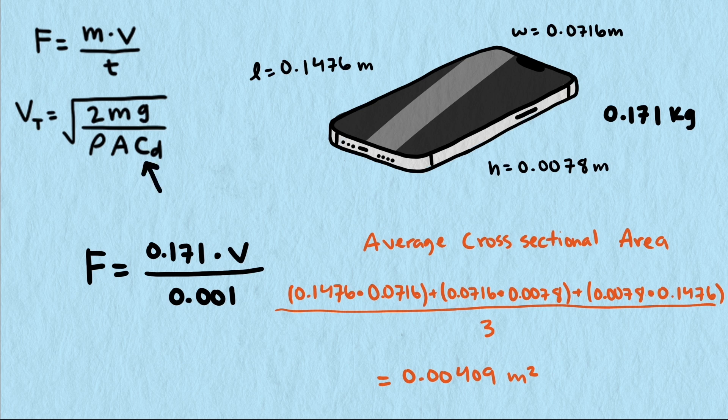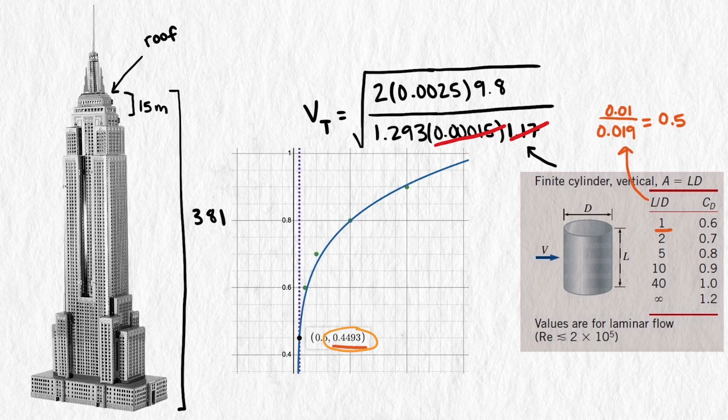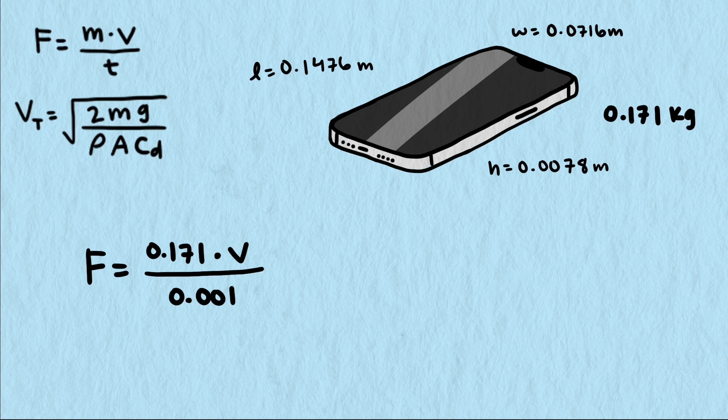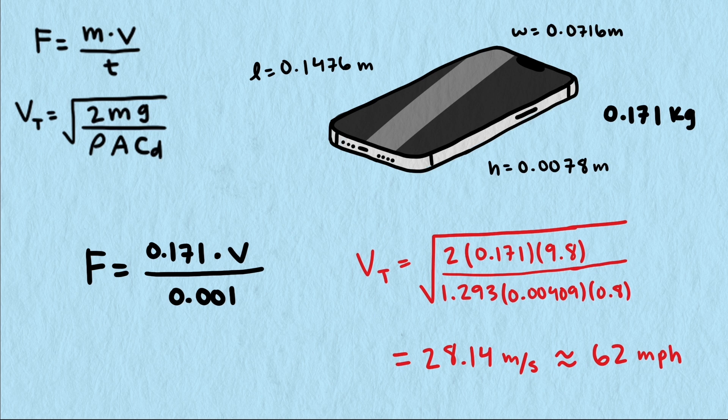Now we need a drag coefficient. Our penny falling on its face had a drag coefficient of 1.17, and falling on its edge we estimated at 0.4. Since our phone is tumbling and has a similar thin plate shape, let's average these two and use 0.8 for our drag coefficient. This gives us a terminal velocity of about 28 meters per second, which is 62 miles per hour. A decent speed.